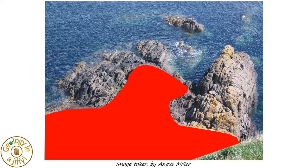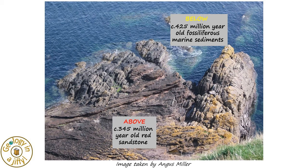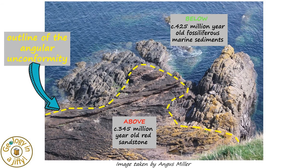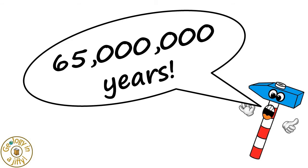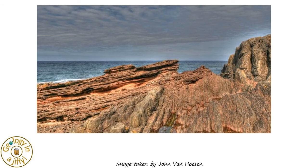Overlying these grey coloured rocks are almost horizontally bedded red coloured sandstones. These were laid in a desert, and are much younger at around 345 million years old. From above, one can see the trace of the angular unconformity separating the two different sets of sedimentary rocks. This unconformity represents an amazing 65 million year gap in deposition — 65 million years! That's amazing!